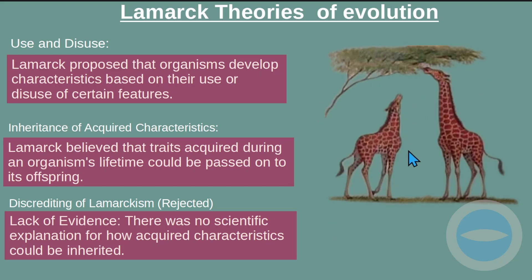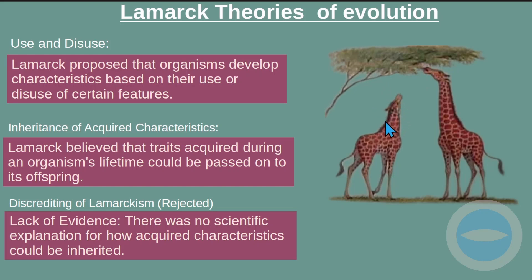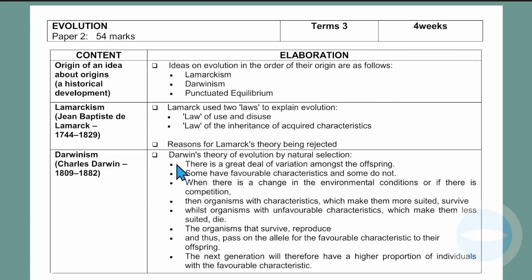To summarize Lamarck: all giraffes started with short necks. As the environment changed and trees grew higher, giraffes stretched their necks to reach the higher branches, and the necks grew longer. They then passed this long neck to their offspring — which is why, according to his theory, all giraffes have long necks. However, his theory was rejected. Now let's move to Darwin's theory.